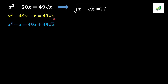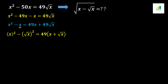In the next step, -49x will move to the other side of the equation and convert into +49x. On the right side we get 49x + 49√x, and the left side of the equation will be expressed as x² - x.